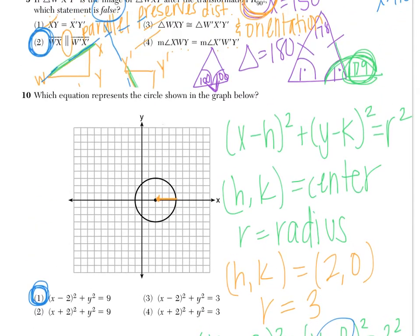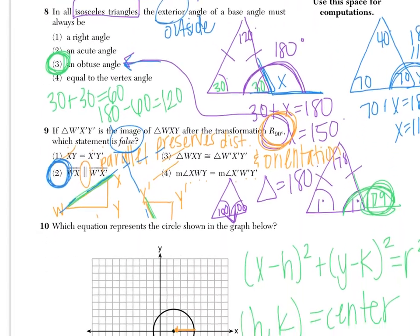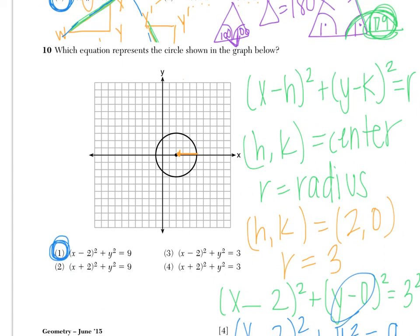So the answers for this page are the following. Number 8 is choice 3. 9 is choice 2. And 10 is choice 1.